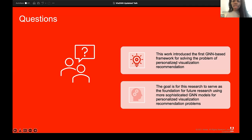So in closing, this work introduced the first GNN-based framework for solving the problem of personalized visualization recommendation. The goal for this research is to serve as the foundation for future research using more advanced and sophisticated graph neural network models for personalized visualization recommendation problems. I would like to thank Adobe Research, my collaborators there. I would also like to thank the GEM program for working with me during this research. And I will now take any questions.